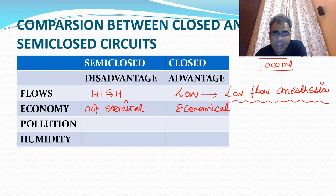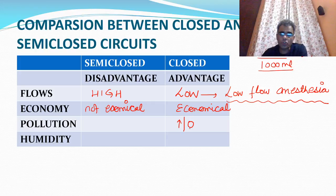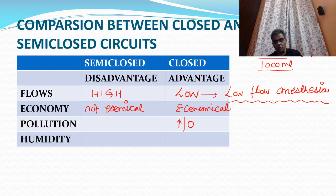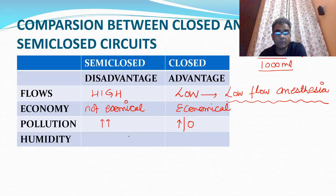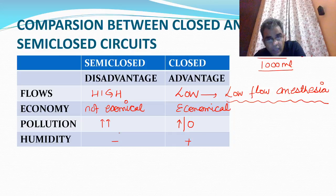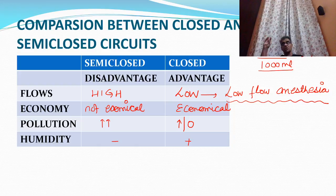Since gases are not venting out into the atmosphere, there should be minimal or no theatre pollution with closed circuits, while the possibility of theatre pollution is very high with semi-closed circuits. Water produced during the reaction preserves humidity, which is very important. If humidity falls below 50 percent, there is complete cessation of cilia activity. If cilia stops working, the patient will not be able to clear secretions, leading to atelectasis, pneumonitis or septicemia.